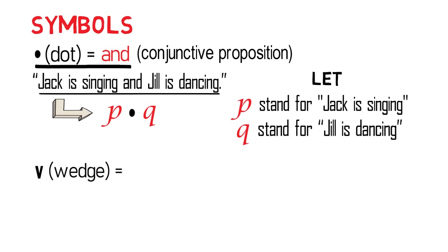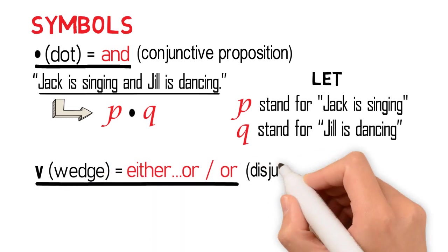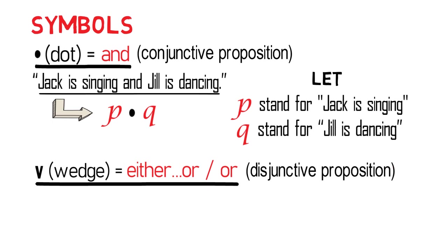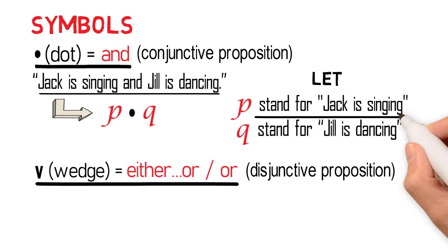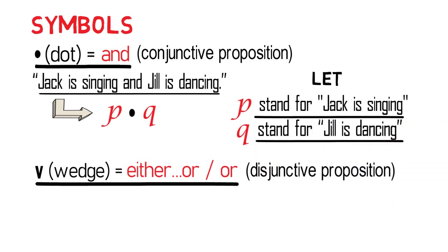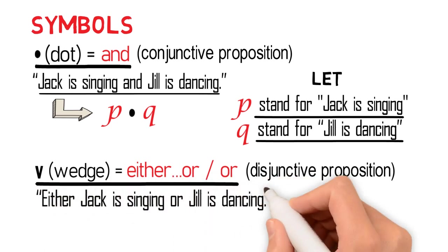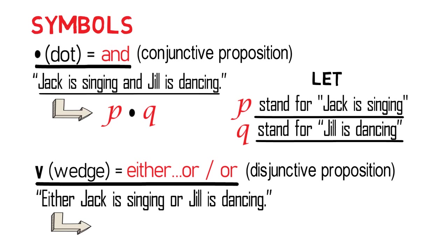Then we have the symbol wedge, which is read as 'either…or' or just 'or.' This is used to symbolize the connective of a disjunctive proposition. Disjunctive propositions are connected by the words 'either…or' or simply 'or.' So if we let P stand for 'Jack is singing' and Q for 'Jill is dancing,' then 'Either Jack is singing or Jill is dancing' is symbolized as P ∨ Q. Note that this proposition is an inclusive disjunction; the exclusive disjunction will be discussed with the four types of compound propositions.